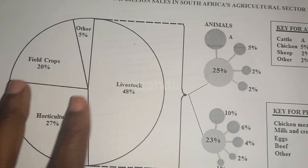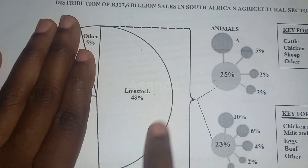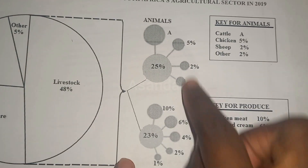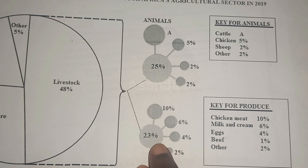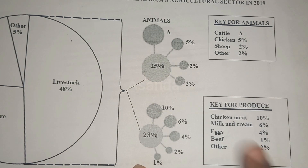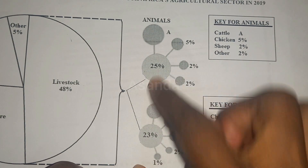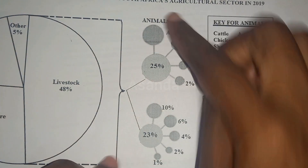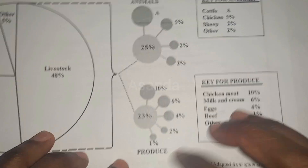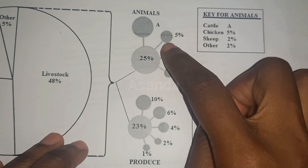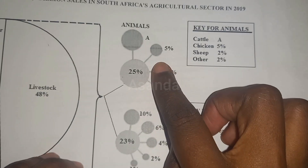The livestock portion — that 48 percent — is divided into two parts: 25 percent for animals and 23 percent for produce. Those two add up to give us the full 48 percent.